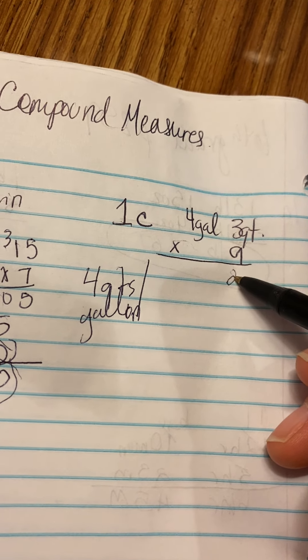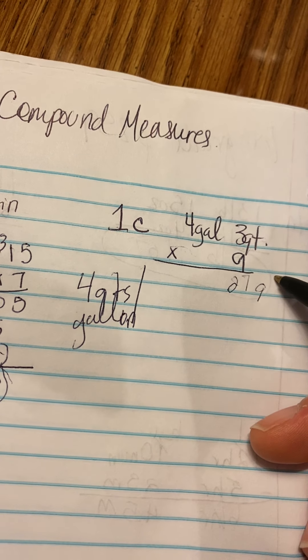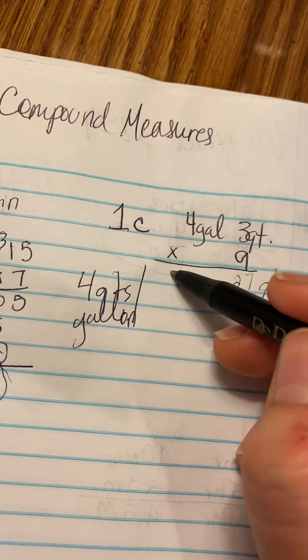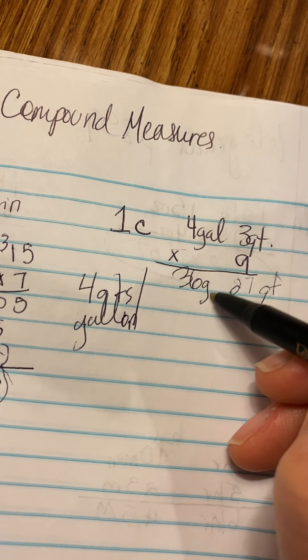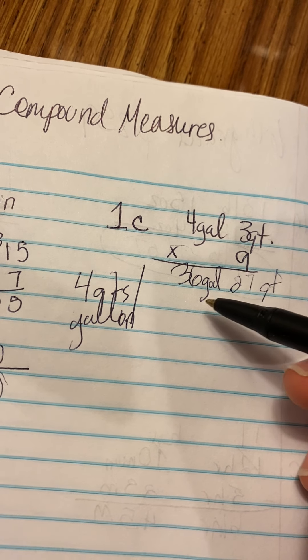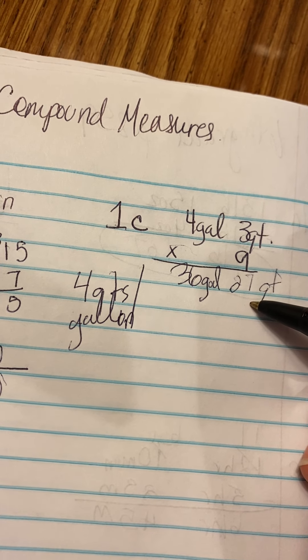3 times 9, 27 quarts. And then 4 times 9 is 36 gallons. So we have 36 gallons, 27 quarts.